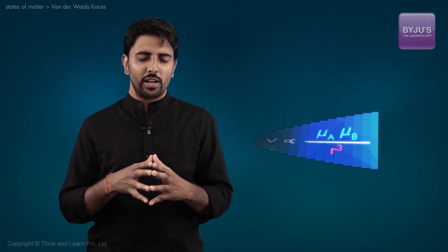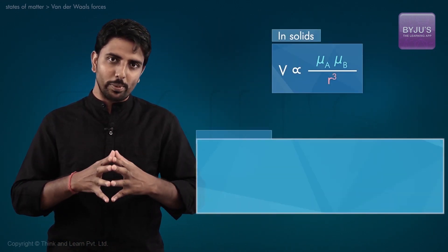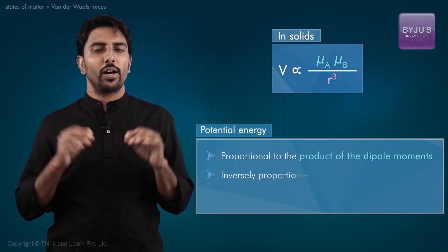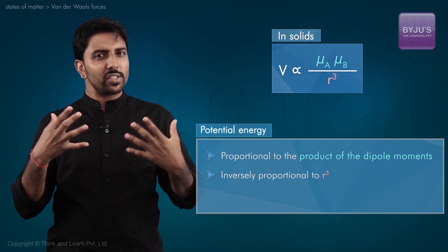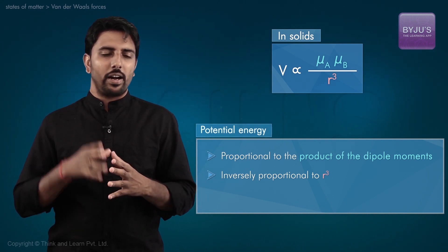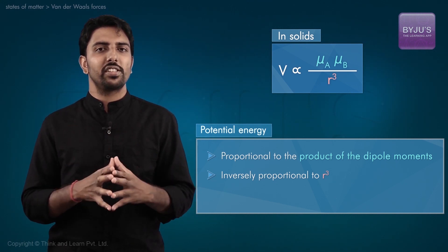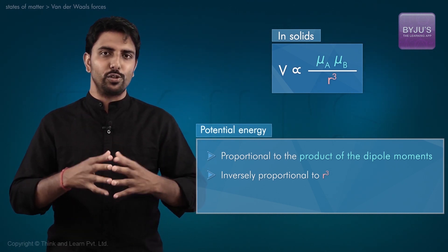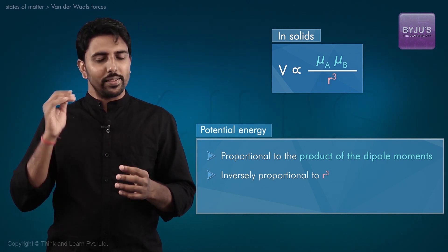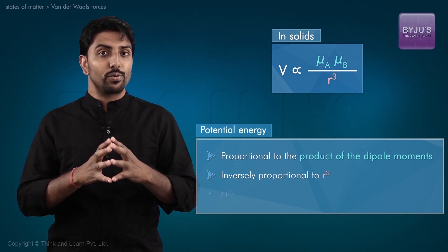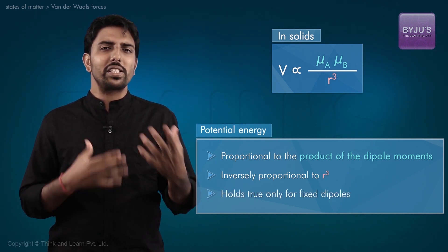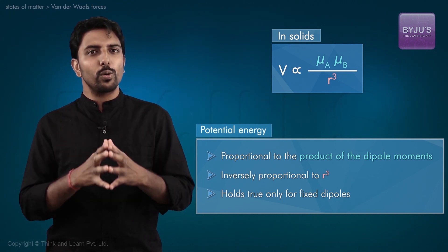In general, the potential energy between two fixed dipoles is proportional to the product of the dipole moments and inversely proportional to r cubed. The constant of proportionality, which may or may not be positive, is determined by the positions and relative orientation of dipoles. Do note that this proportionality holds true only for fixed dipoles, which is generally appropriate for molecules in the solid phase.